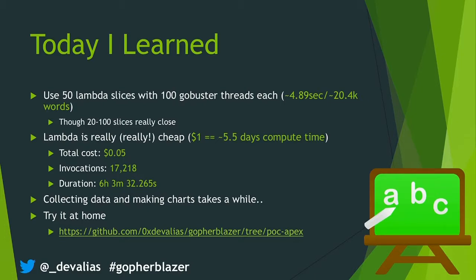Lambda is actually really cheap. I calculated that about a dollar will give you five and a half days of compute time. The total cost for all of my testing was about 5 cents — that was for 17,000-odd invocations running for about six hours of compute time. So it works out pretty well, particularly when you're on the kind of money that pen testers make. One thing I found really annoying and would do better next time: don't manually collect all your timing data and play with it in Excel — it's just a real pain. There is a GitHub link with some code, and I'll tweet out this slide deck afterwards.